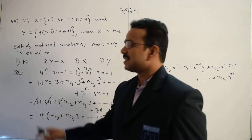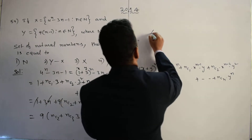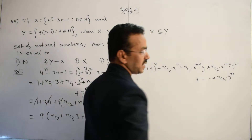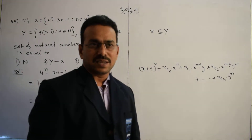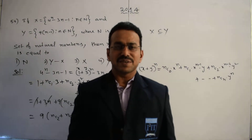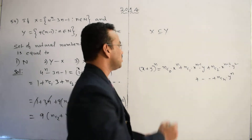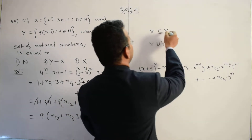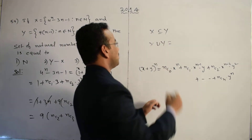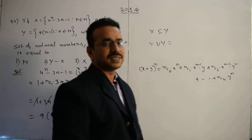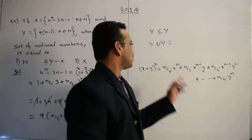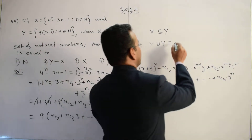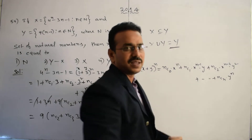So clearly we can conclude that X is a subset of Y. Since X is a subset of Y, we can easily calculate X union Y. X union Y equals Y, since Y is the bigger set. This is the required conclusion.